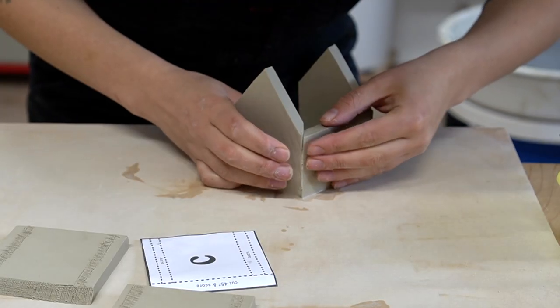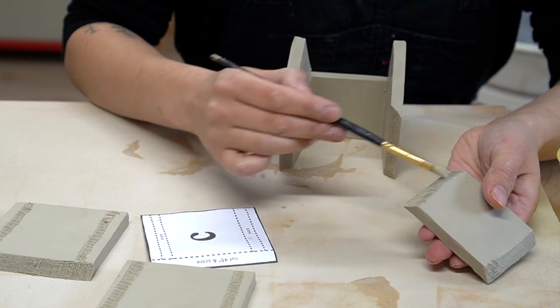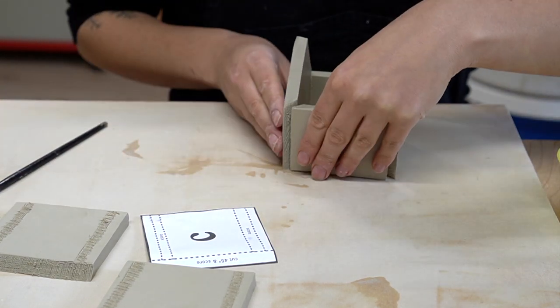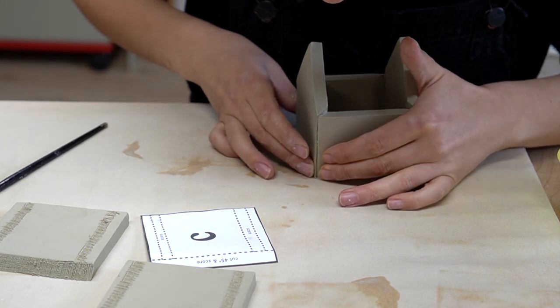Try to attach the pieces together at right angles and apply soft but firm pressure. It might get a little messy here as the slip squeezes out. That's a good thing. You can clean it up later with your finger or a paintbrush.